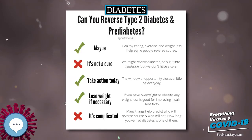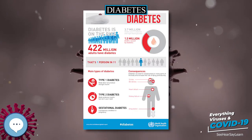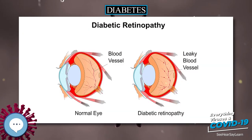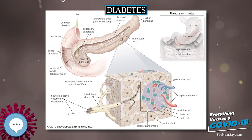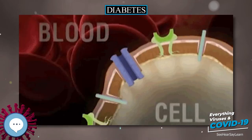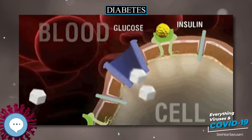As of 2017, an estimated 425 million people had diabetes worldwide, with type 2 diabetes making up about 90 percent of the cases. This represents 8.8 percent of the adult population, with equal rates in both women and men. Trends suggest that rates will continue to rise. Diabetes at least doubles a person's risk of early death.